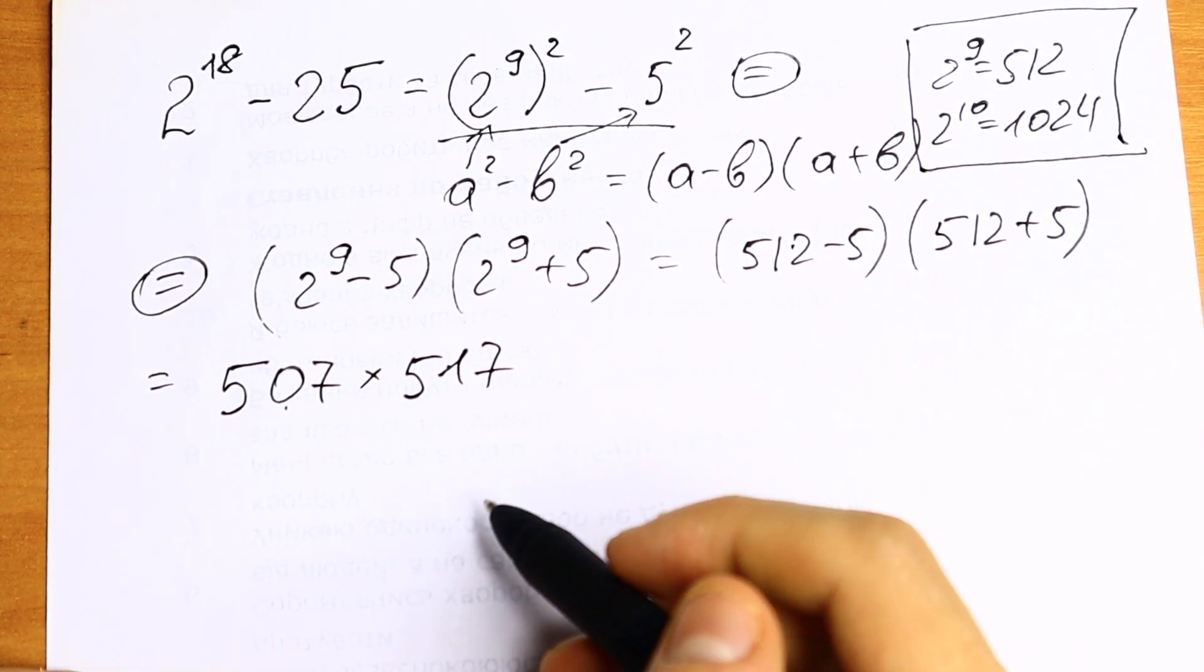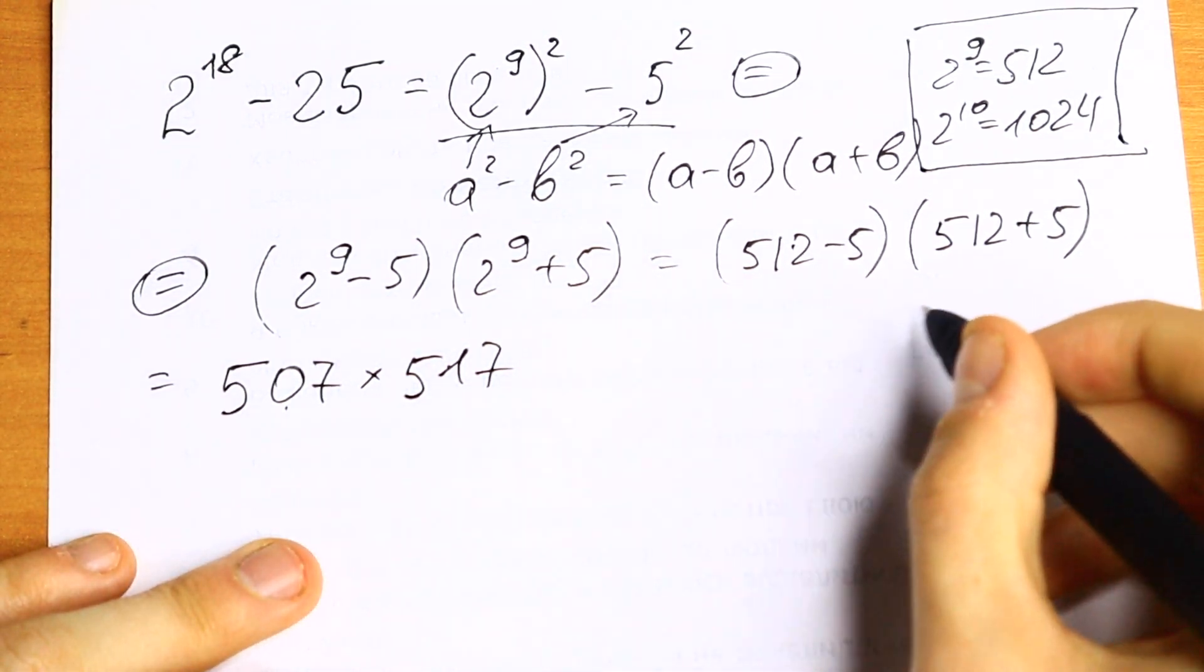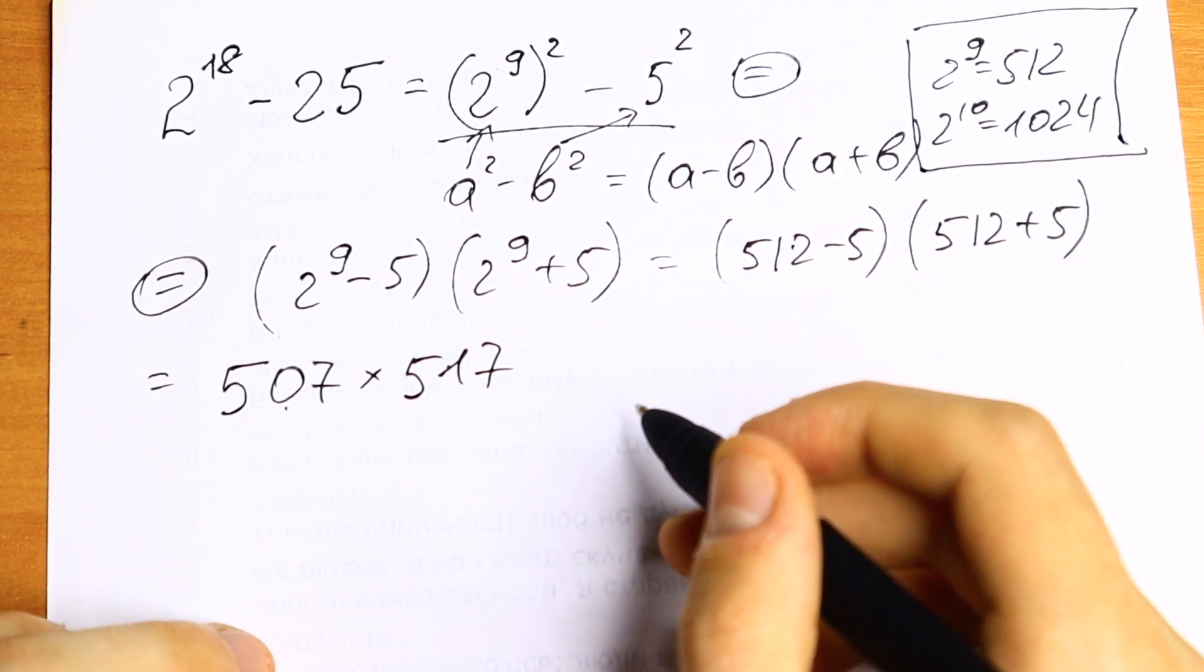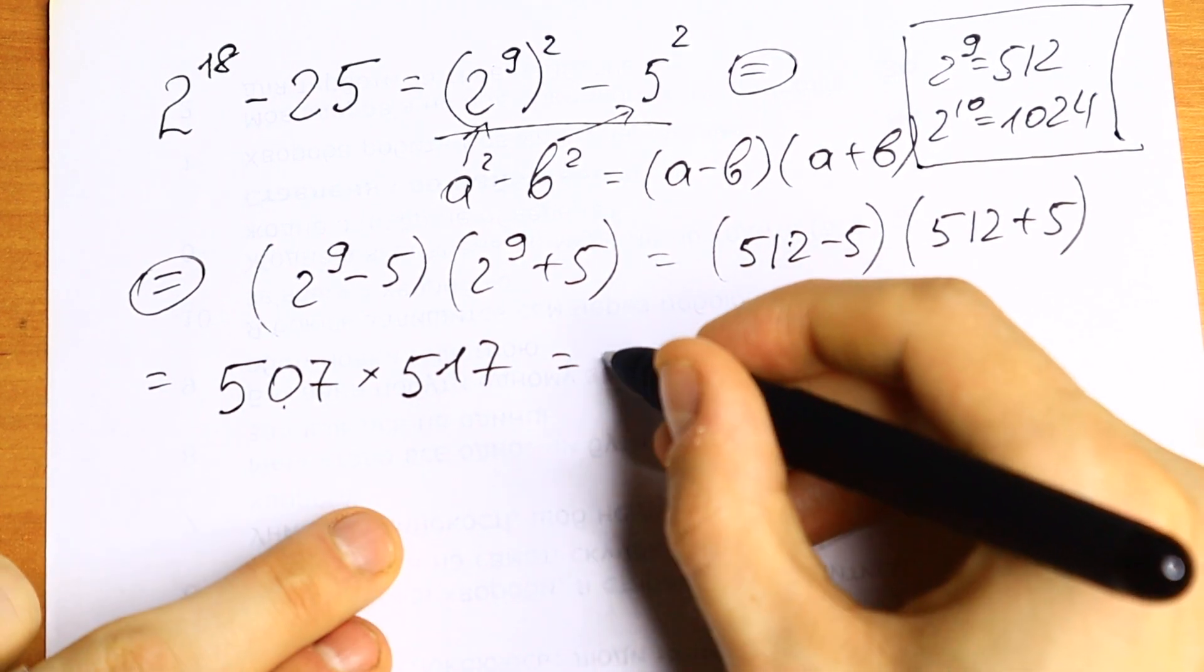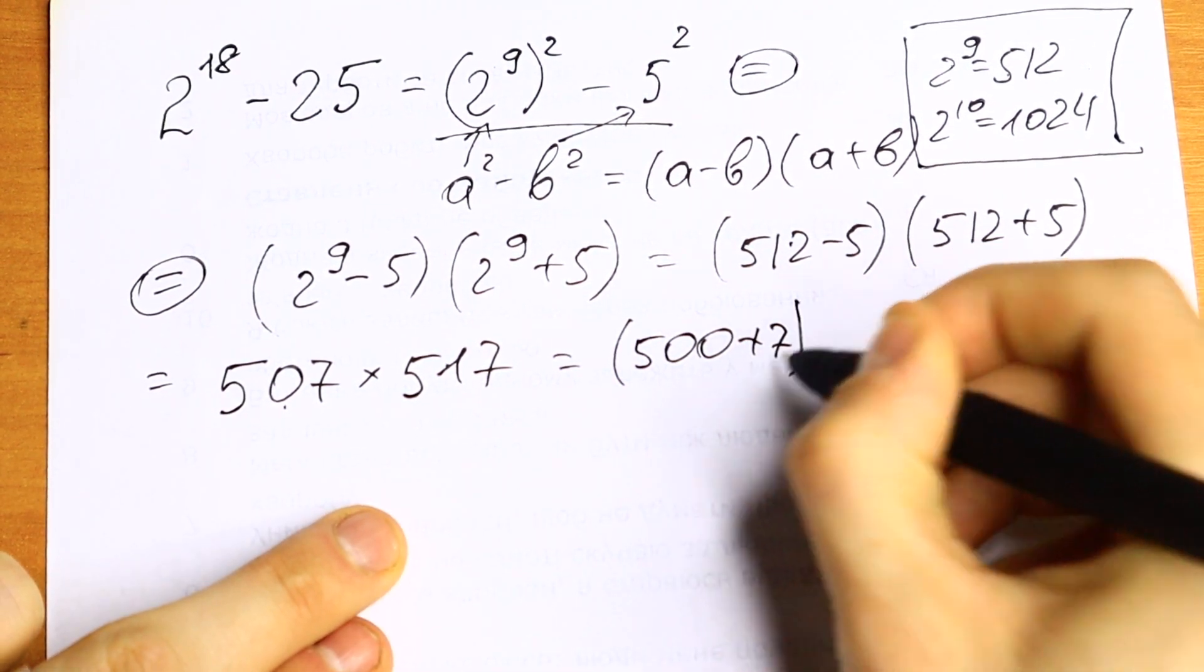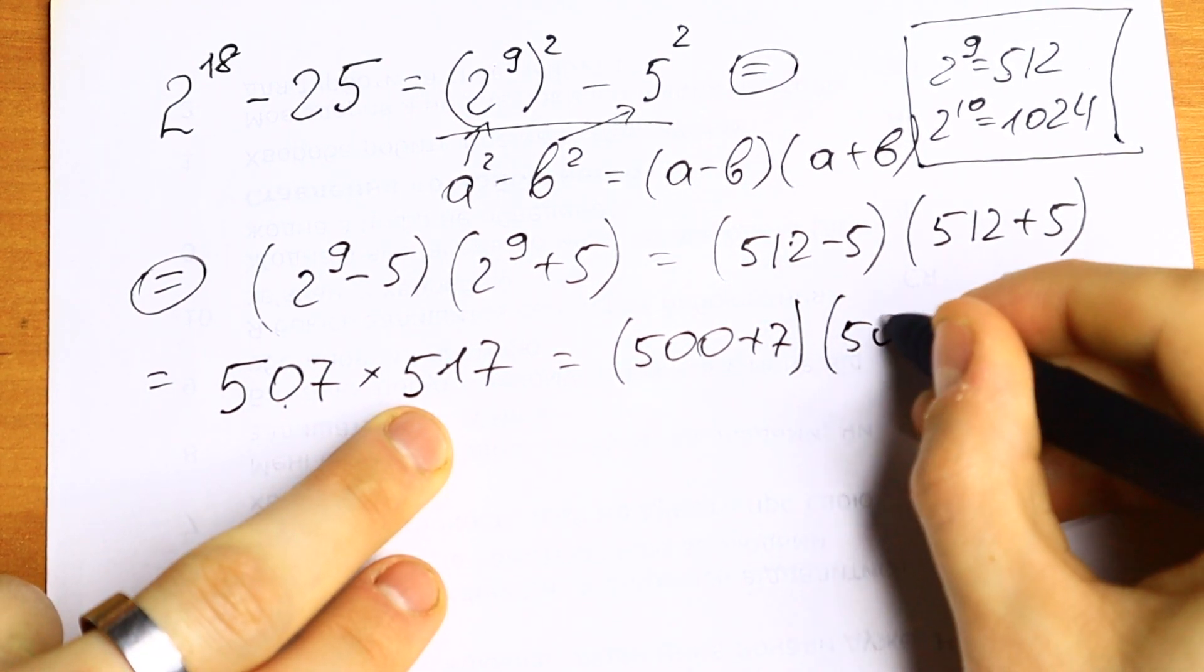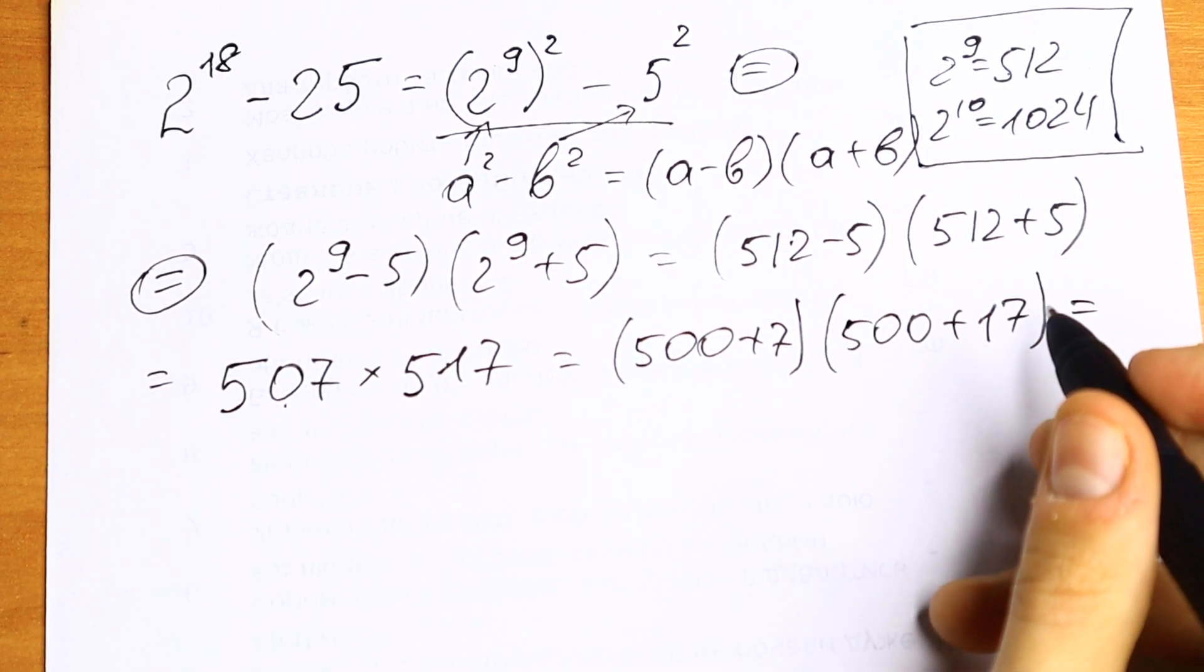So we need to multiply these 2 numbers. How can we multiply this? Of course we can multiply this using the natural case, using the simple case. But I want to show you a really good method how to solve it. Let's write this 507 as 500 plus 7. And let's write this 517 as 500 plus 17. So let's multiply parentheses by parentheses.